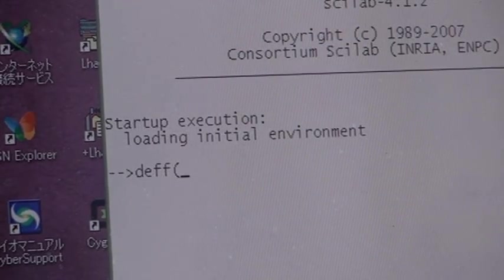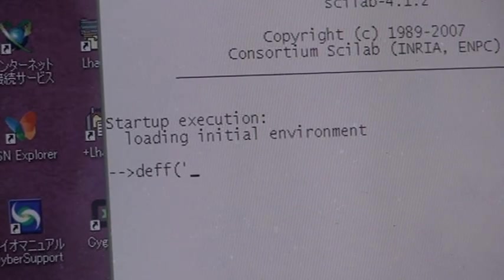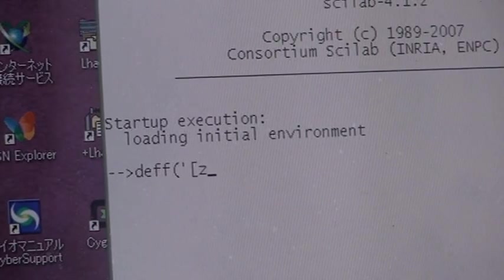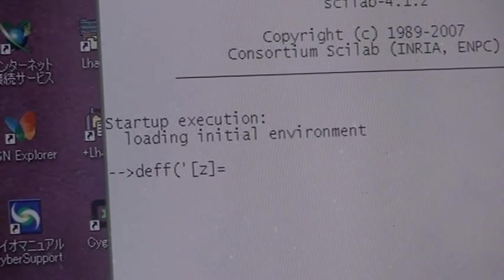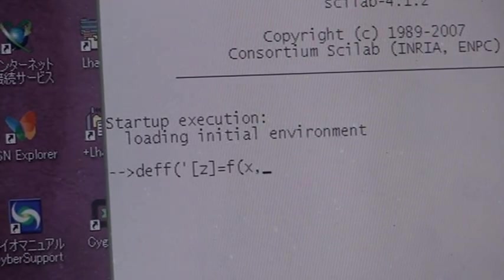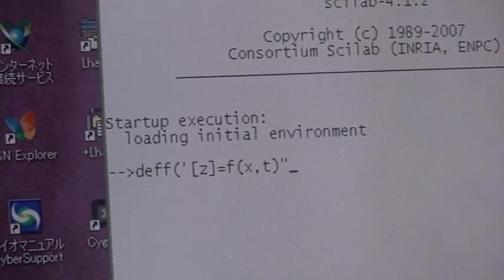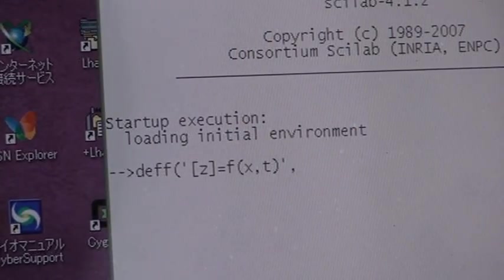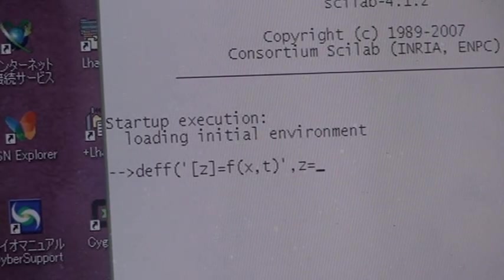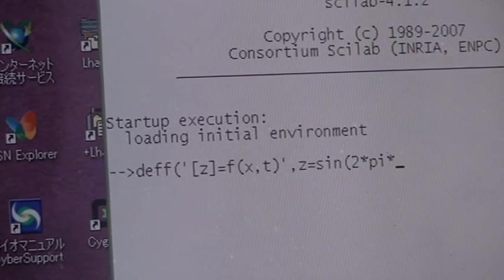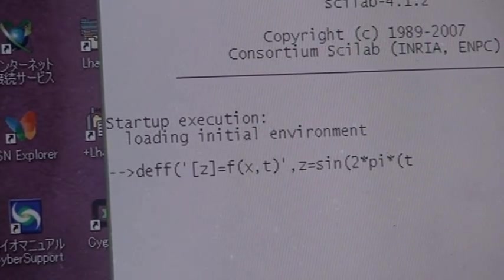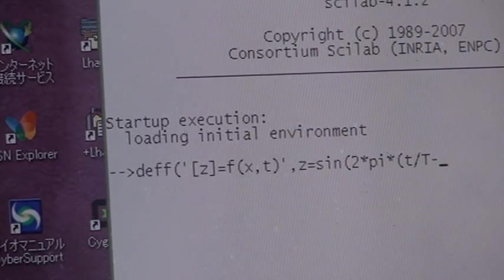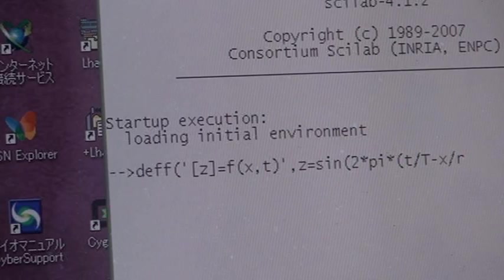First we need to define the curve. This time the axis z equals the function f of x and t, and the equation z equals sine of 2 times π times (t/T - x/r) representing lambda.